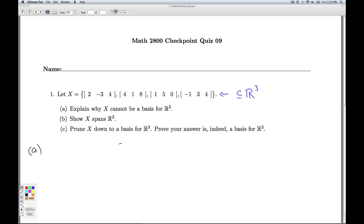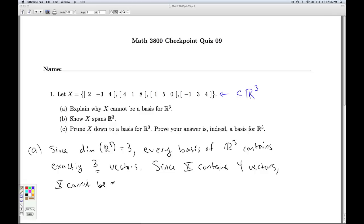So for Part A, we can dispense with pretty quickly here. Since we know the dimension of R3 is three, every basis of R3 contains exactly three vectors. Since X contains four vectors, X cannot be a basis. Okay, so we're done with that.